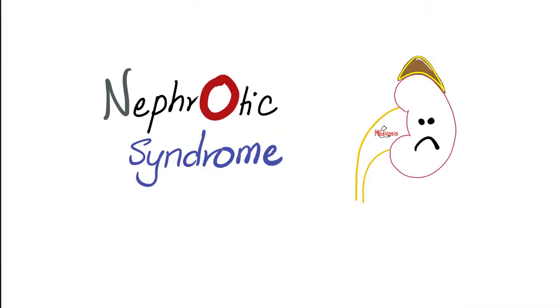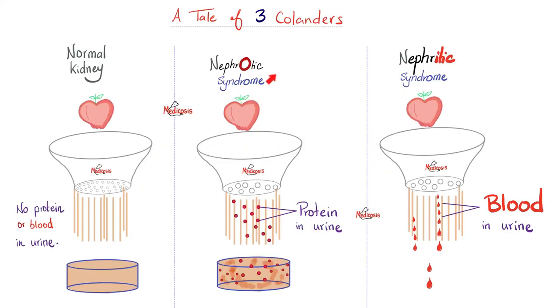In nephrotic syndrome, the kidney loses tons of protein and amino acids in the urine, resulting in decreased amino acid levels — which means you'll be unable to make many proteins.